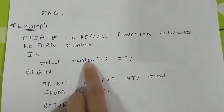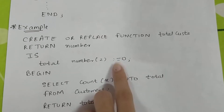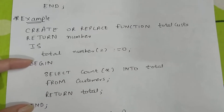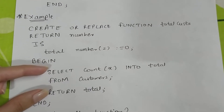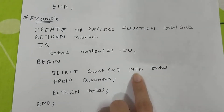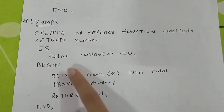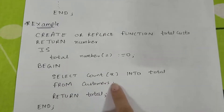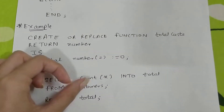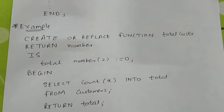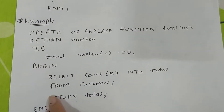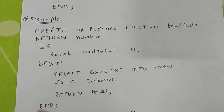We declare a variable called 'total' of type NUMBER and assign it an initial value of zero. In the BEGIN block, we write a SQL query: SELECT COUNT(*) INTO total FROM customers. This counts the number of rows in the customers table and puts the result into the variable 'total'. Then we write RETURN total, and then END.